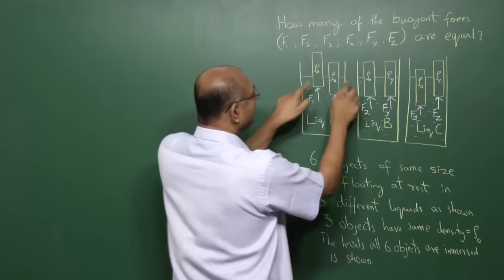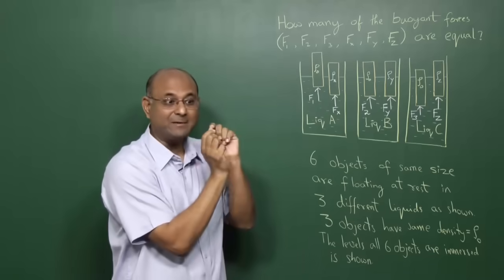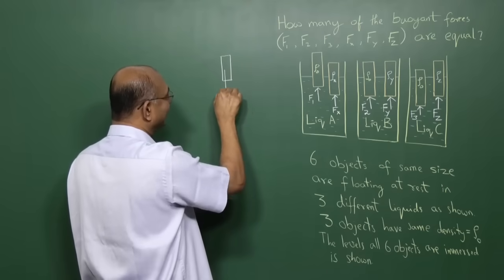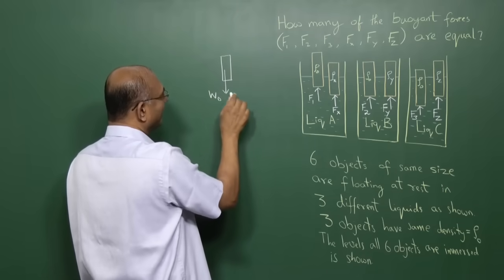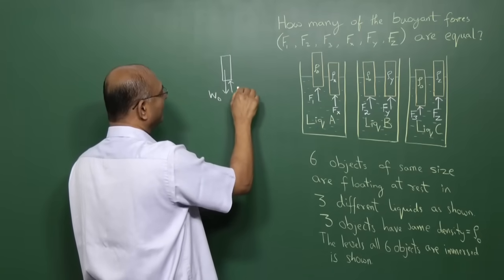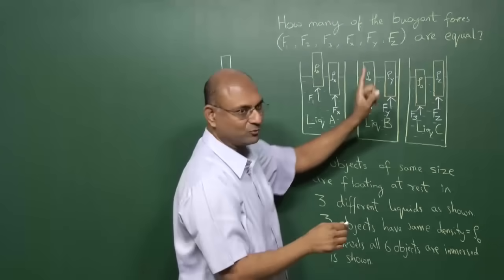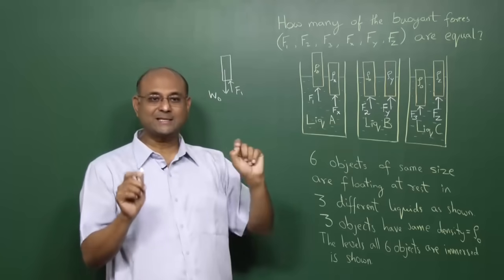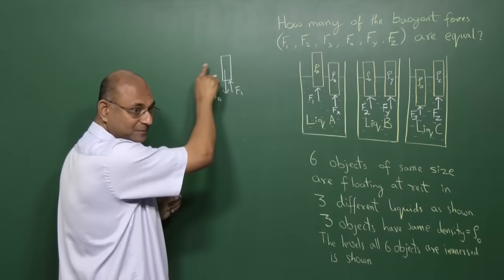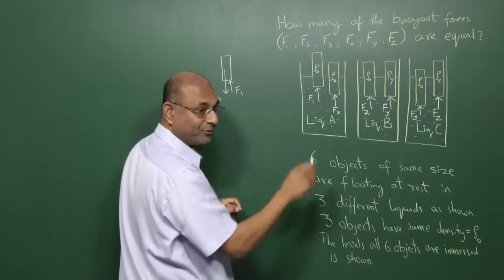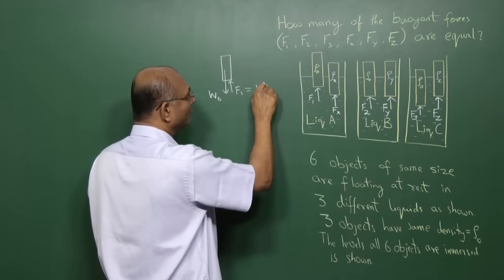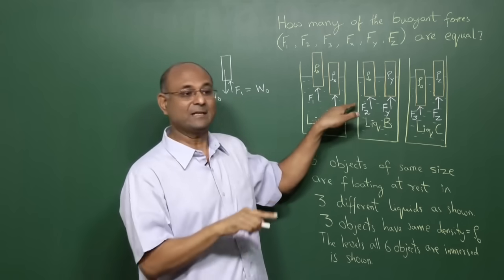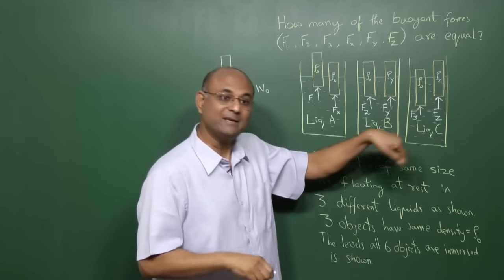One is its weight and one is a buoyant force. Now, these three objects have the same density. So if they have the same density, they must have the same weight. And of course, they have a buoyant force F1, F2, or F3. But they are at rest. The three objects are at rest in equilibrium, which means the net force must be zero. So what must be F1? F1 must be equal to the weight of this object. What must be F2? Again, the weight of the object. And what must be F3? The weight of the object.